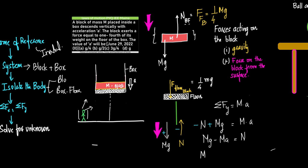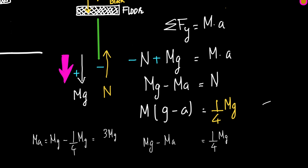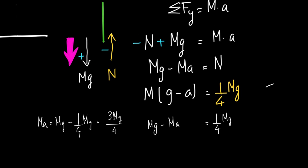Taking M as common: M(g − A) = N. The value of N is given as mg/4. So: Mg − MA = (1/4)Mg. Therefore MA = Mg − (1/4)Mg = (3/4)Mg. M cancels, giving A = 3g/4.